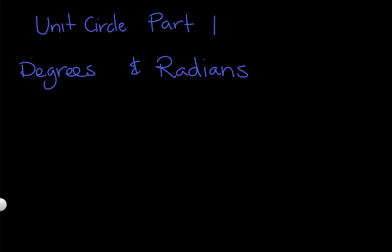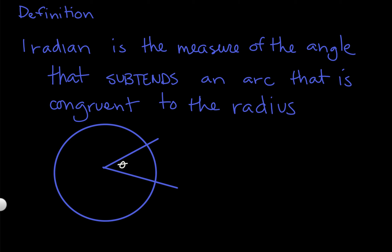So let's first talk about the definition of a radian. By definition, one radian is the measure of the angle that subtends an arc that is congruent to the radius. So what that means is that this angle theta here cuts off this part of our circle, and the measure of that arc is going to be equal to the radius. And that's where you get one radian.